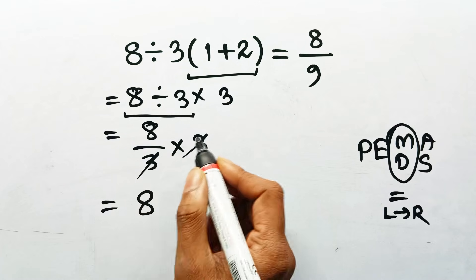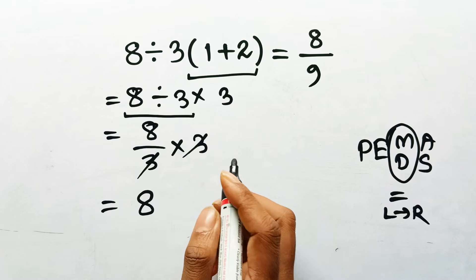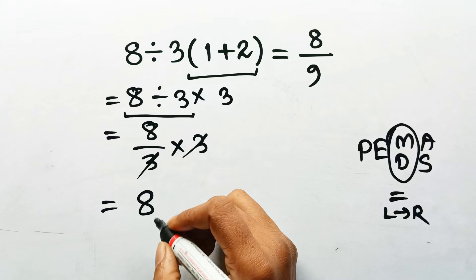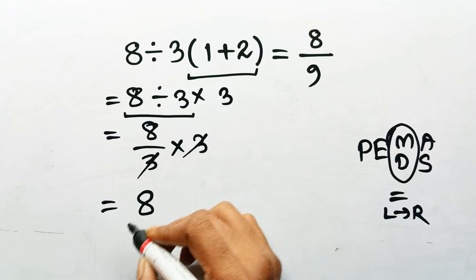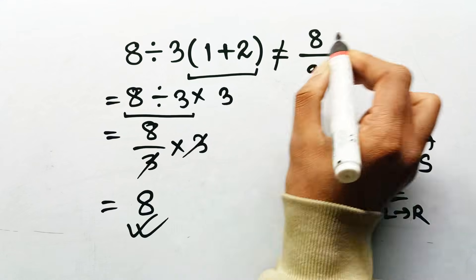Just 8. Not a fraction. Not 8 over 9. Just a clean, boring, confident 8. So, the correct answer is 8. Not 8 over 9.